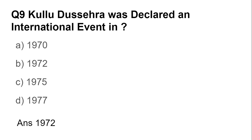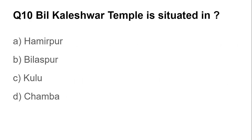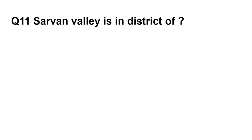Question number ten: Vill Kaleshpur Temple is situated in? Options are: Hamirpur, Bilaspur, Kullu, and Chamba. The answer is Hamirpur — Vill Kaleshpur Temple is situated in Hamirpur. Question number eleven: